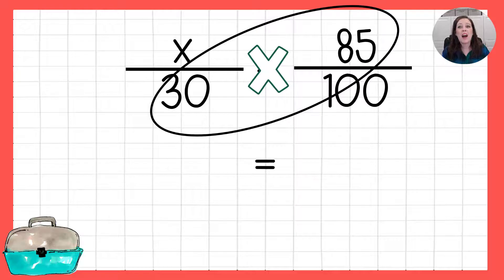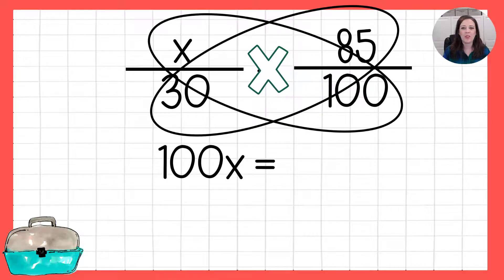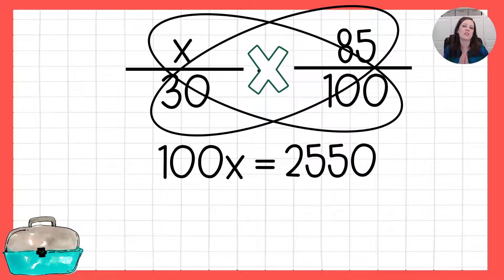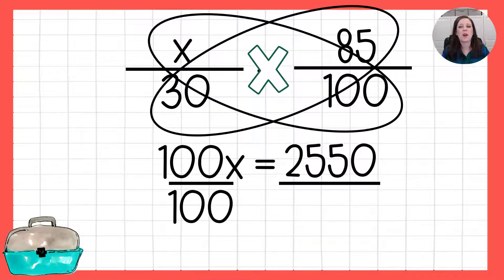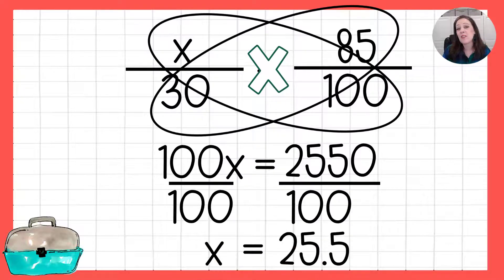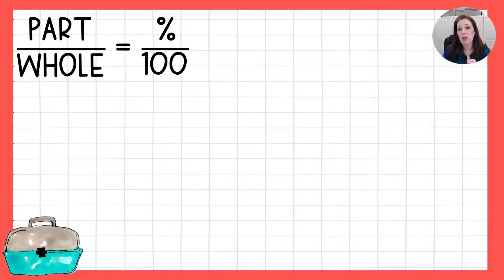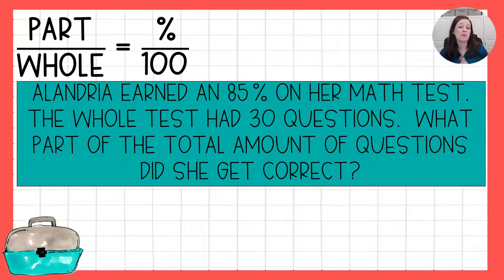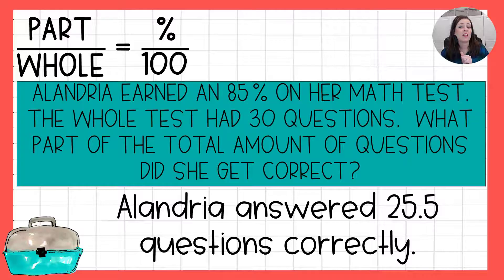30 times 85 and 100 times x. I'm throwing those in there a little backwards, but you get the gist. It gives us 100x equals 2,550. Going to divide both sides by 100 and x is 25 and a half. So taking that back to the story, it was asking us how many did she get correct? Alandria answered 25 and a half questions correctly. I'm betting on that half she forgot to show her work.